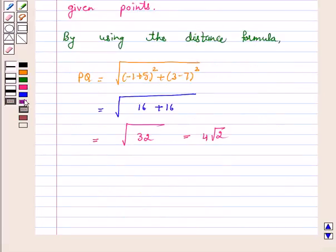Hence, the answer for this question is: the distance PQ is 4√2. I hope the question is clear to you. Bye and enjoy yourself.